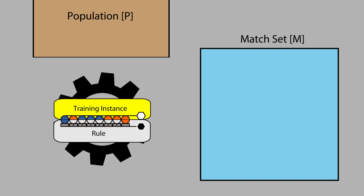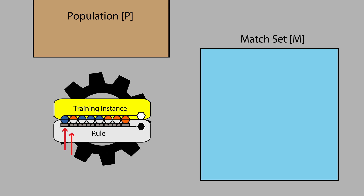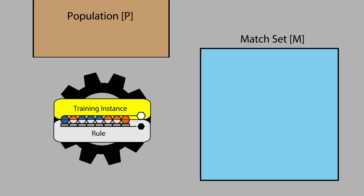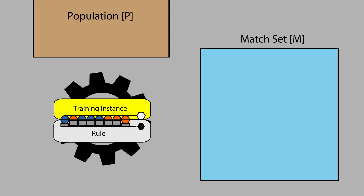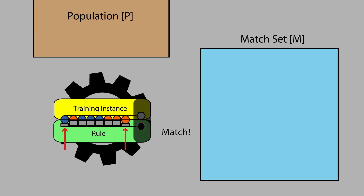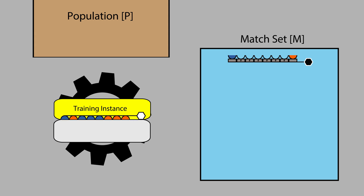For example, matching looks at each attribute specified in the rule and checks whether it matches the value in the instance. Any wildcards in the rule match by default. The endpoint value is ignored in matching. If all specified attributes match, the rule is moved to the match set.